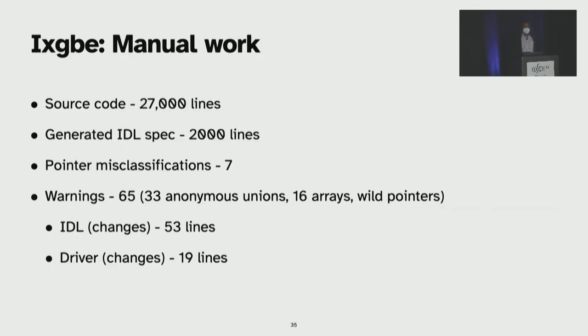How about the manual work? For iXGBE with 27,000 source lines, we generate an IDL specification of around 2,000 lines. And we misclassify seven pointers, and we issue 65 warnings to the developer, of which 33 are anonymous unions, and 16 are for arrays and wild pointers. And we need to manually change the IDL for array size information, which amounts to 53 lines of changes. And for the driver, we need to change 19 lines of code. iXGBE is a complicated driver, so I think from 27,000 lines of code, we can automate it with 2,000 lines with just minimal changes, which is a huge win with respect to automatic analysis.